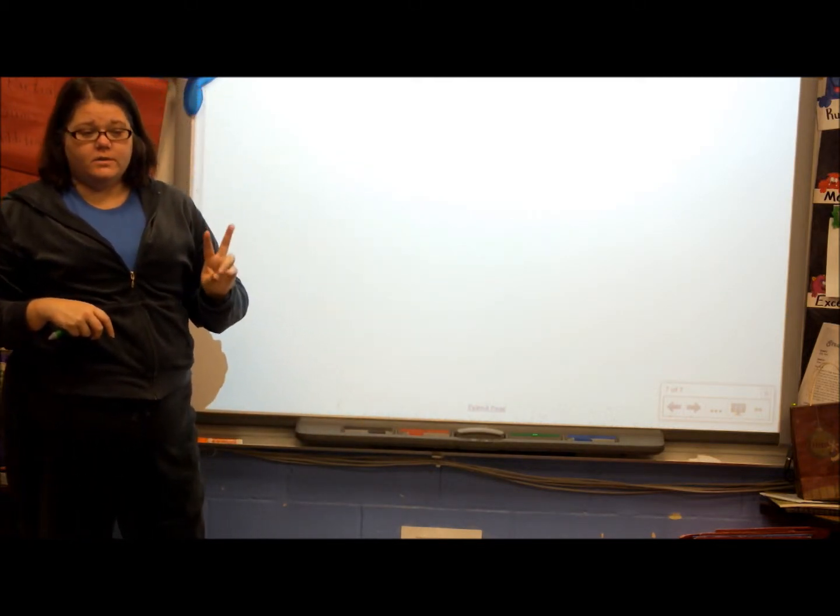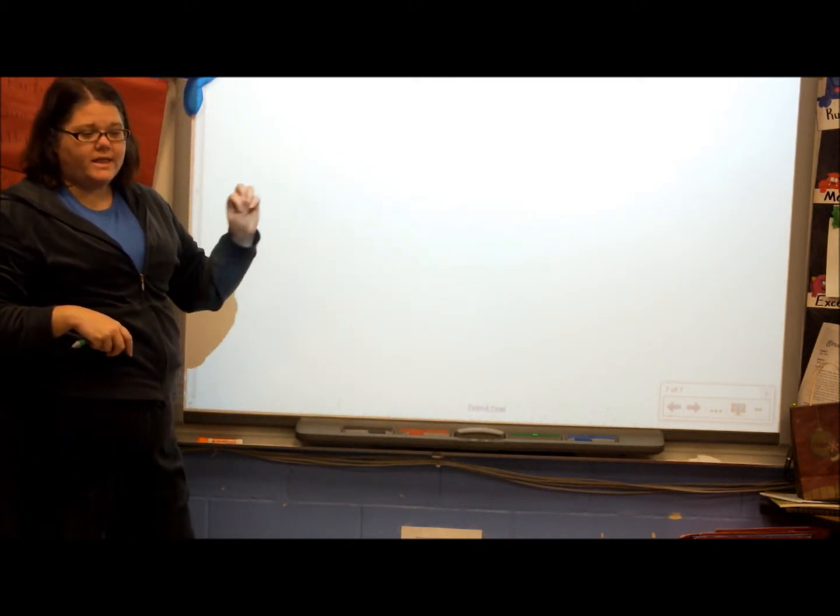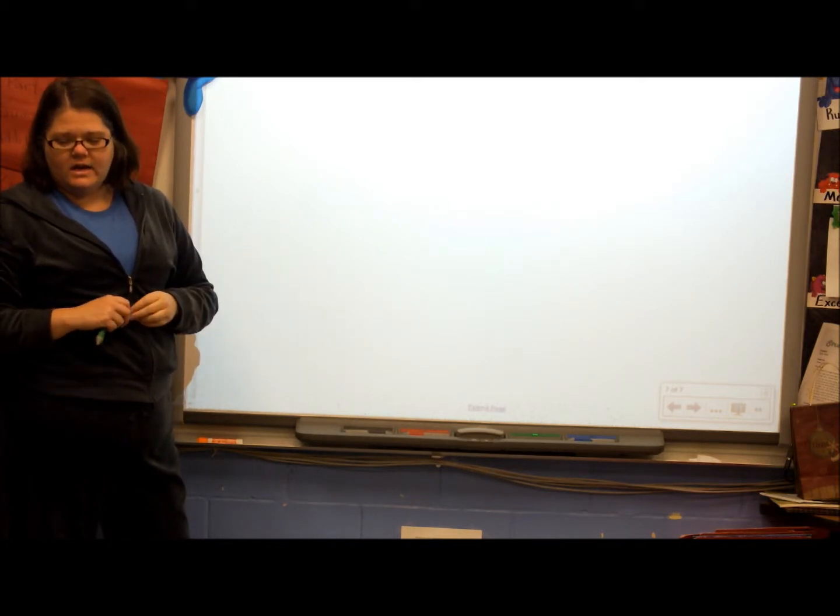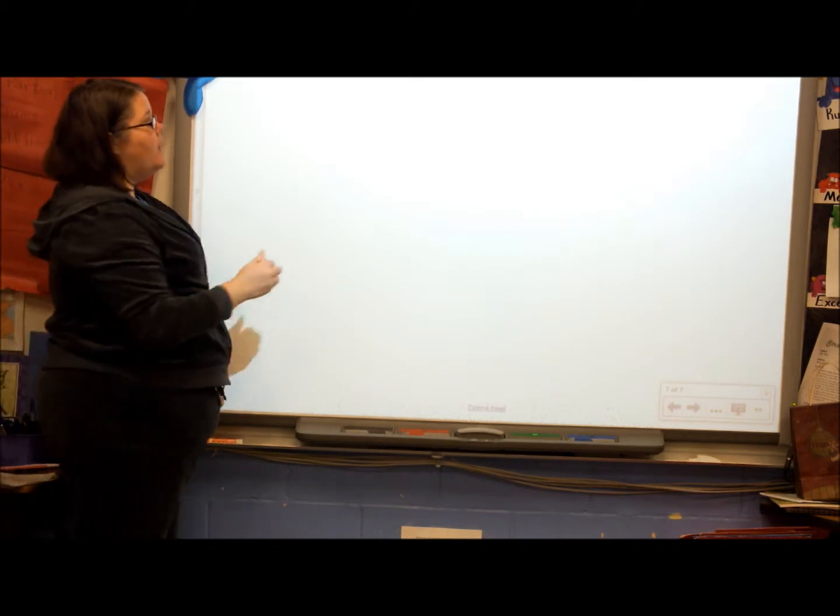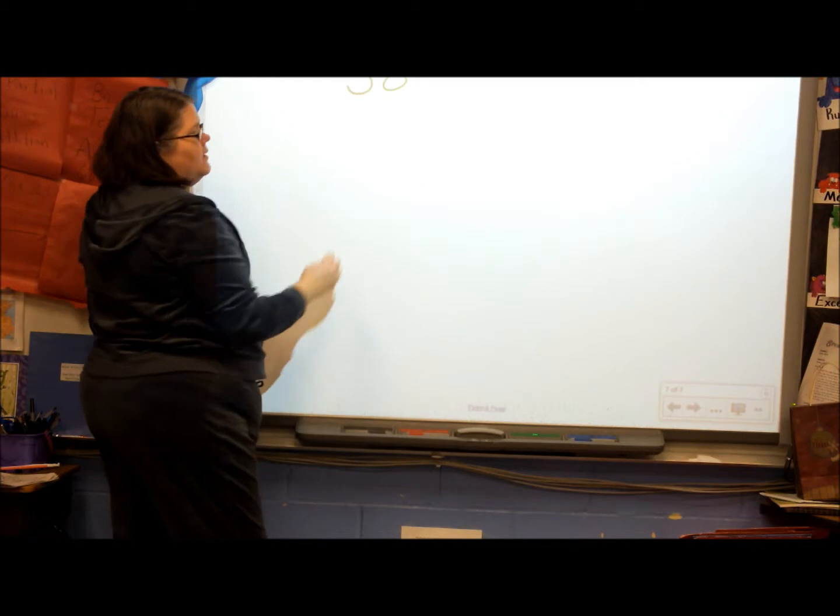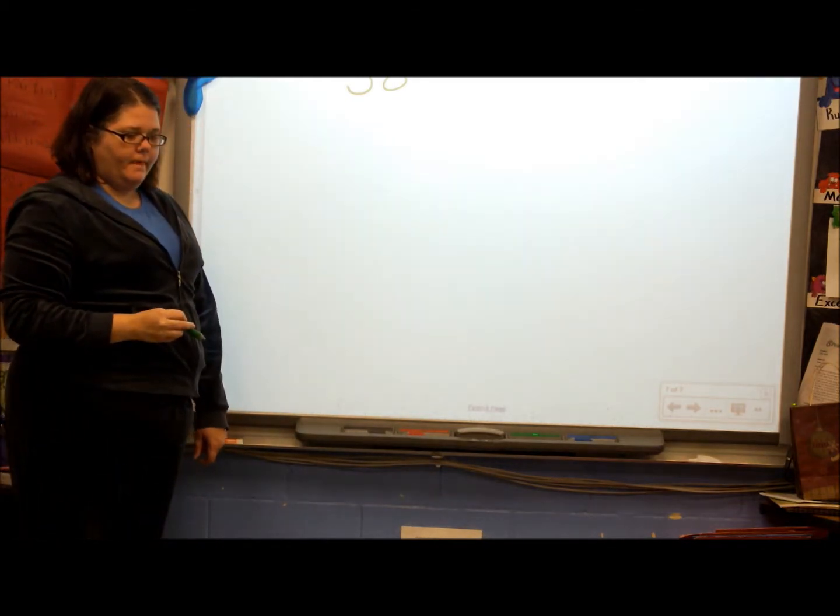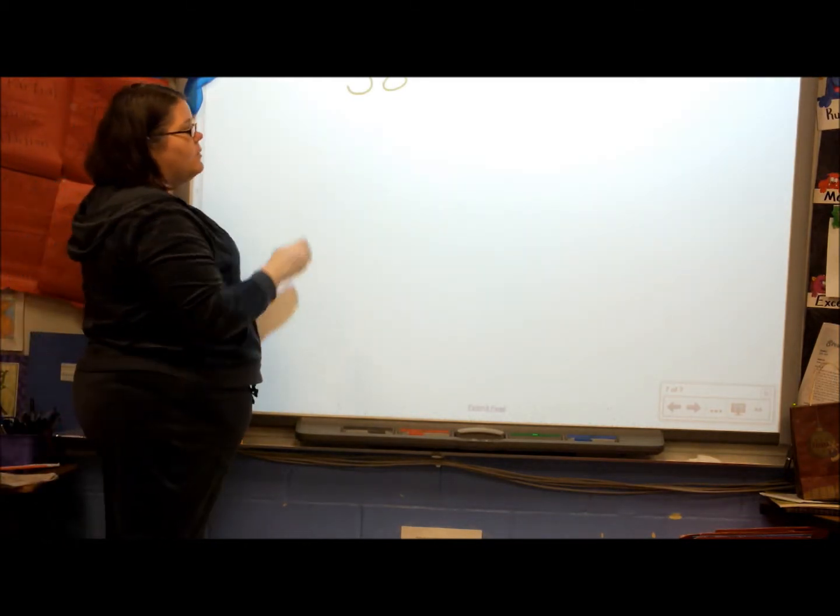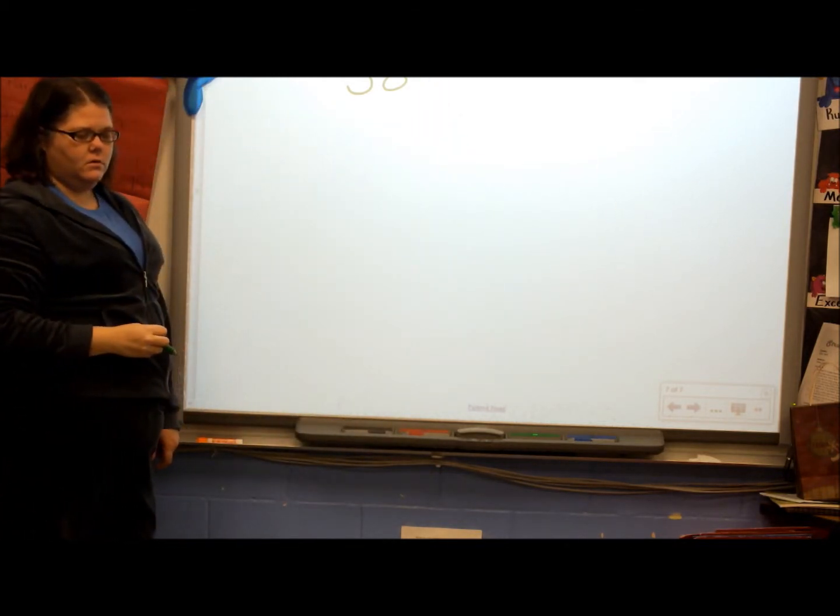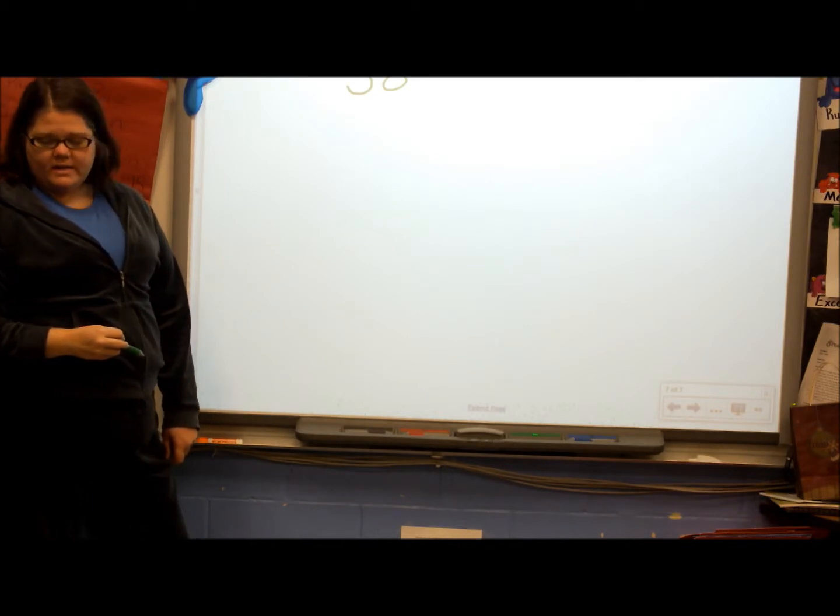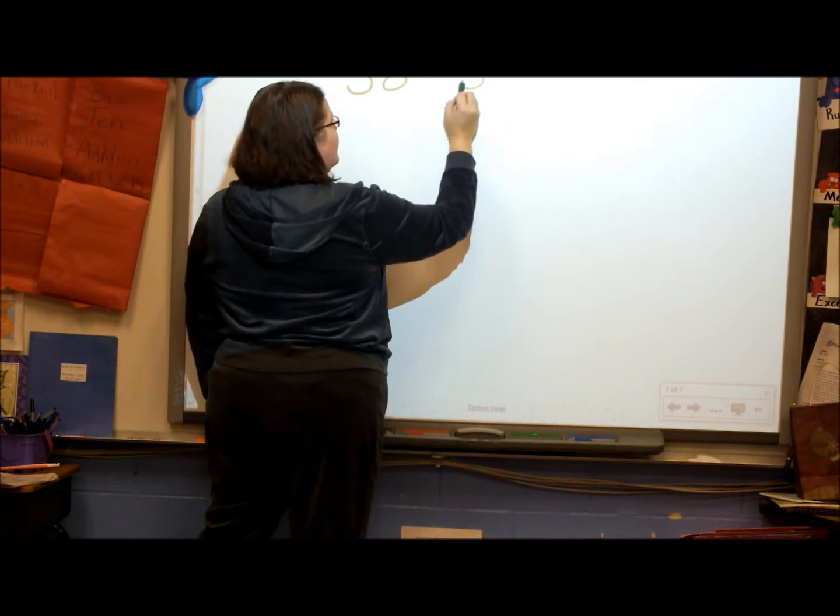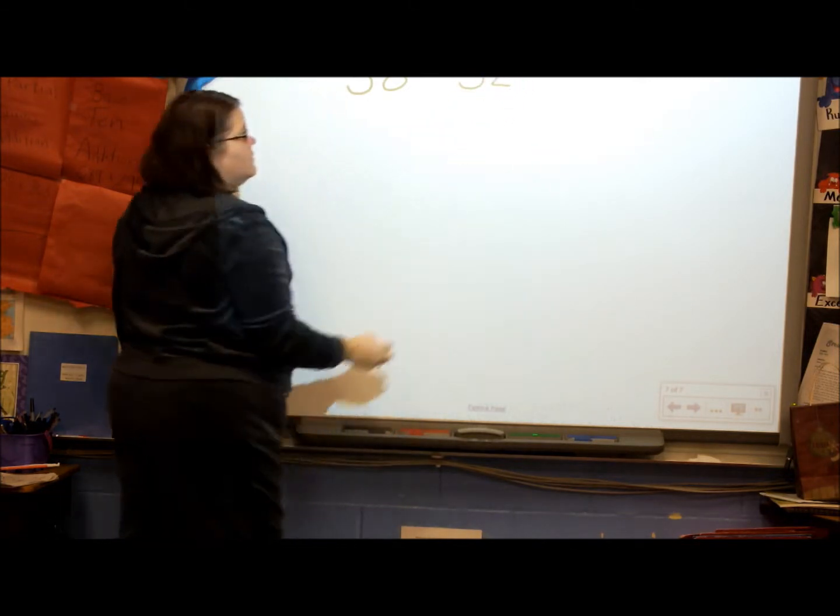We're going to start with a two-digit problem. Please write this as I'm writing it. We're going to start with the number 58. We're doing subtraction, so we have a minus sign. And we're going to do 58 minus 32.